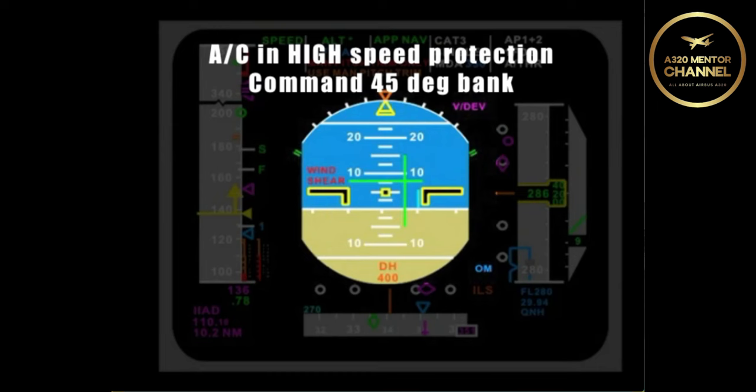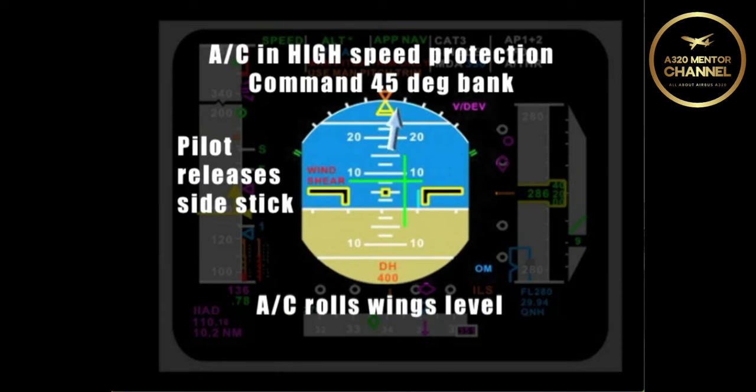Assume that you are in high speed protection. You command 45 degrees of bank and then let go of the side stick. What will occur? The aircraft will roll back to zero wings level. The reason for that is that it is trying to protect itself from over-G-ing or a graveyard spiral.